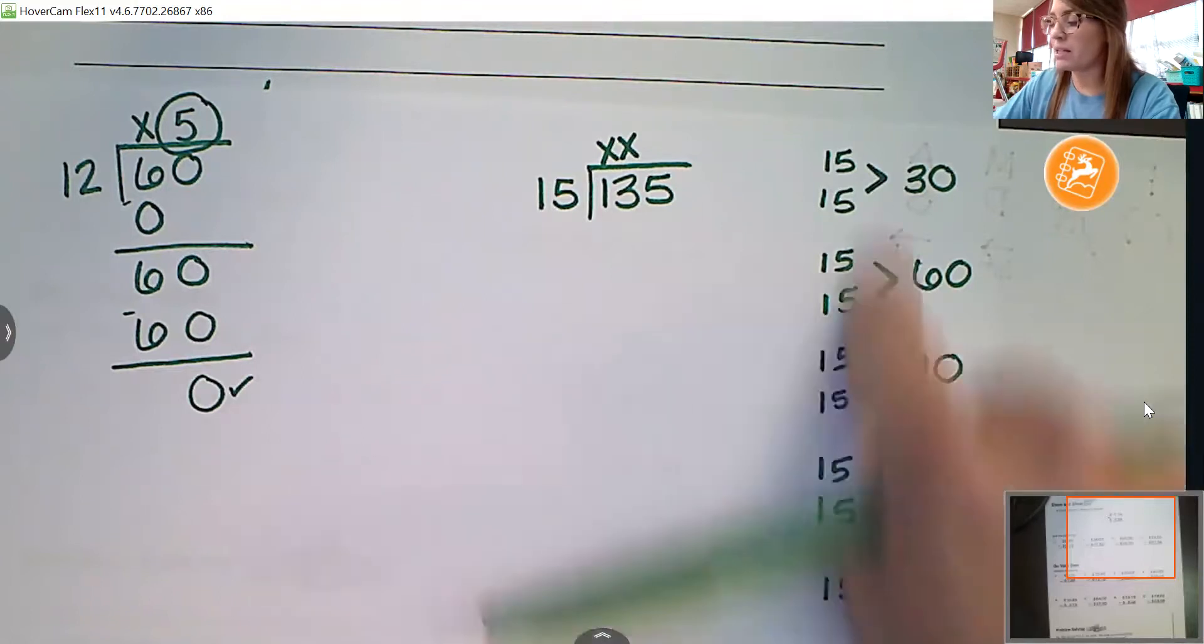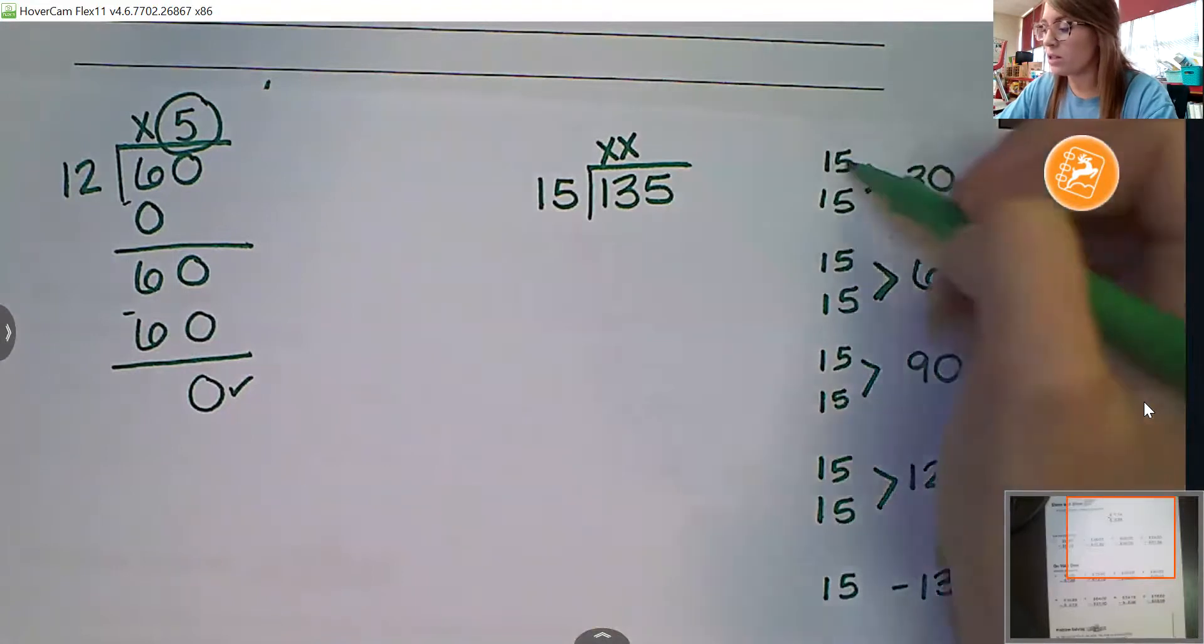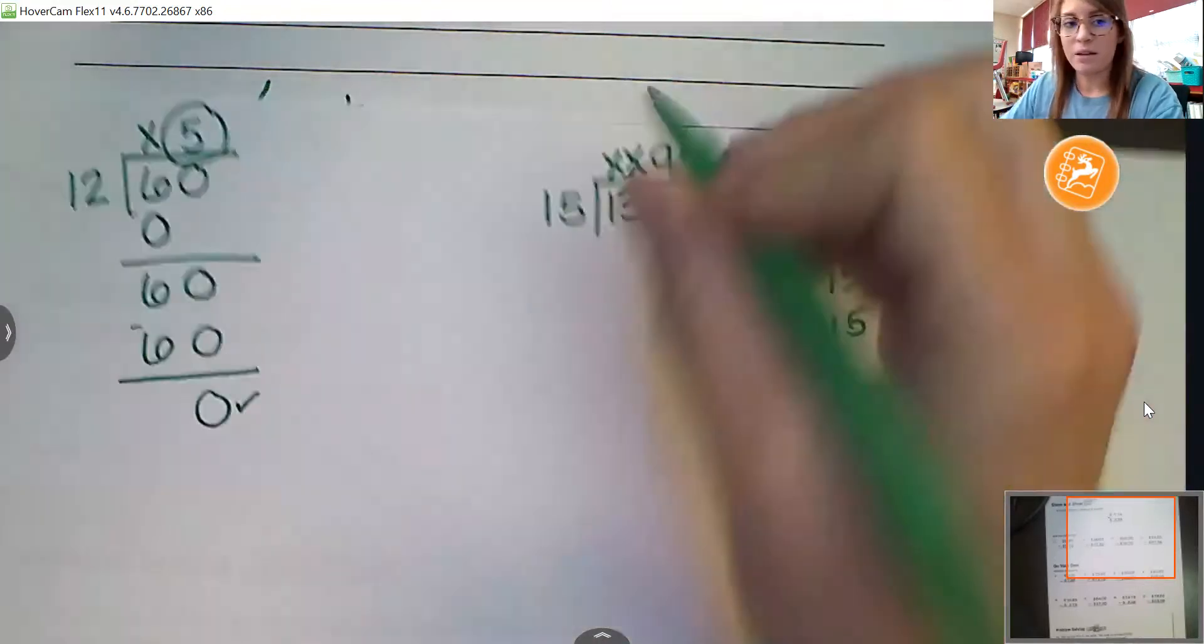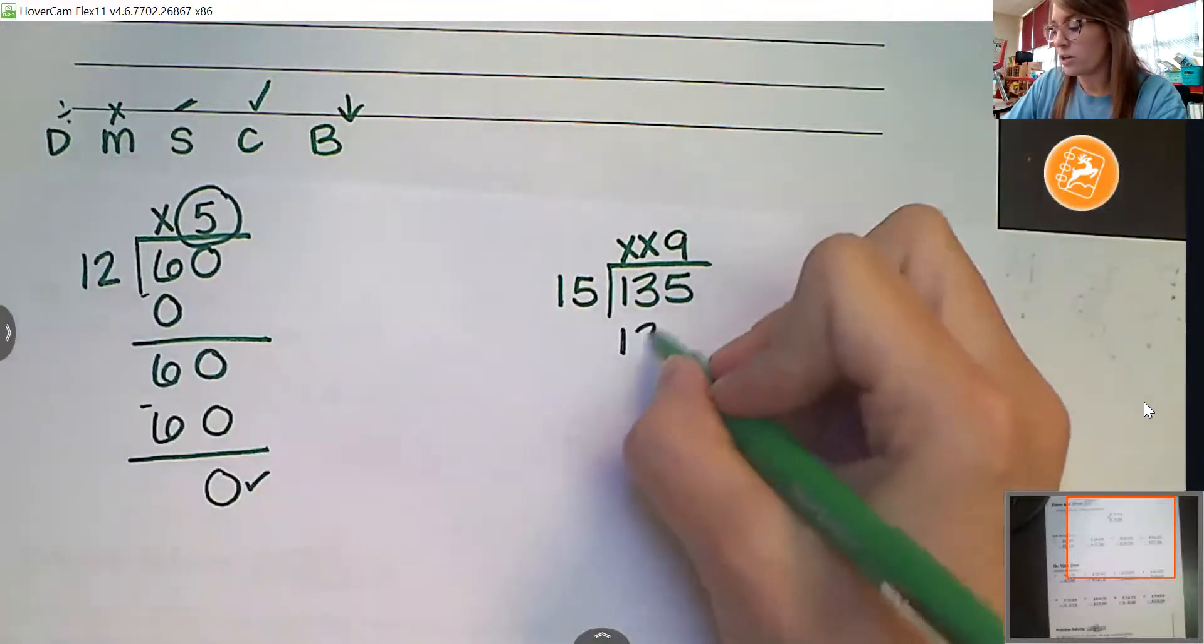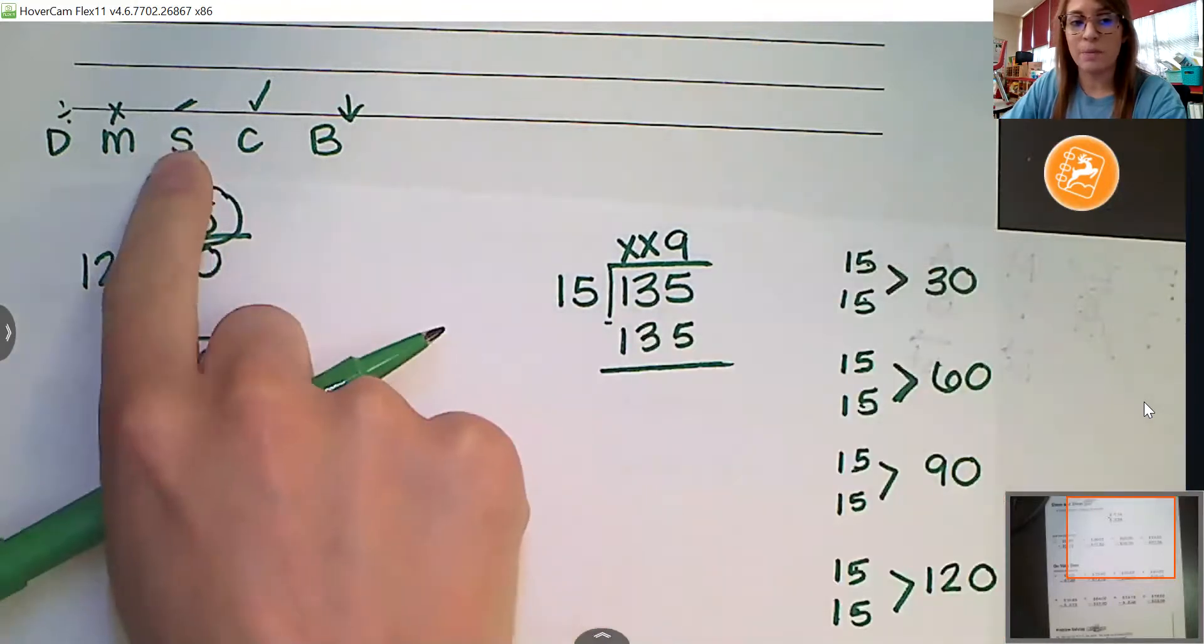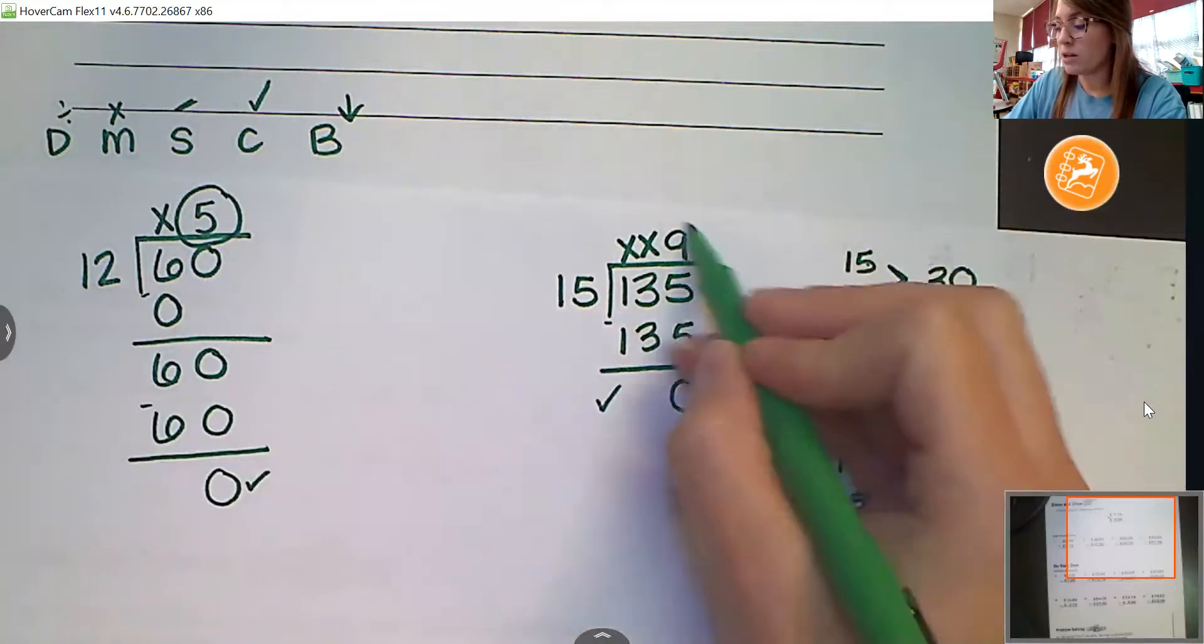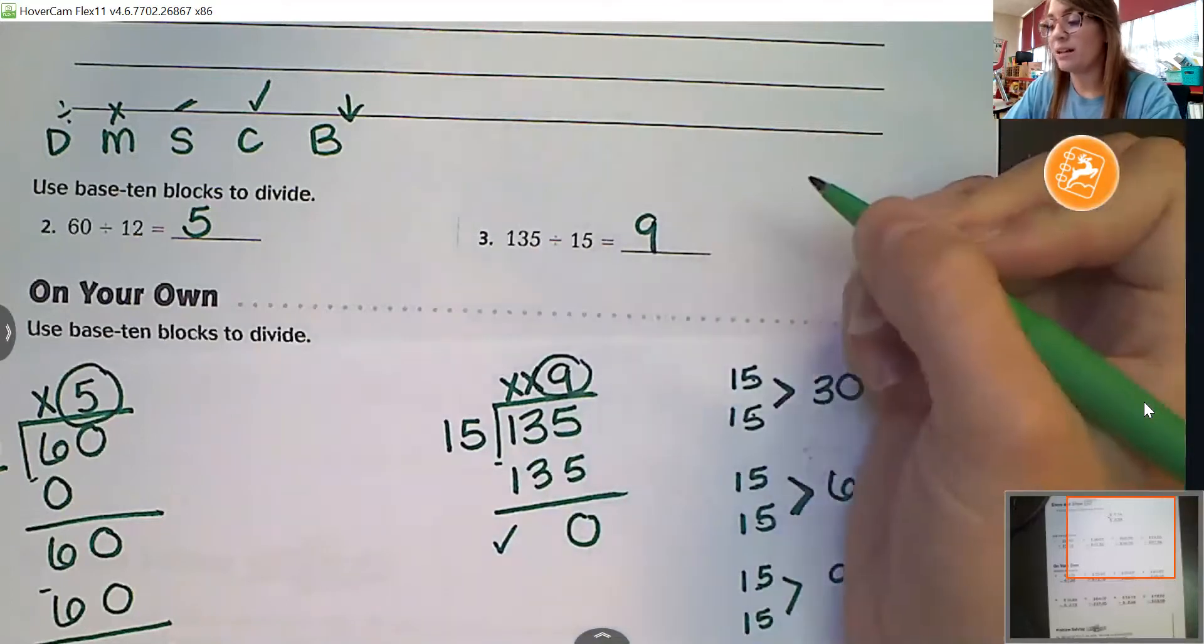Now how can I figure out how many times 15 went into 135? I can just count these up. One, two, three, four, five, six, seven, eight, nine. So, 15 times nine is 135. Then we're going to subtract to zero. Check to make sure this is less than 15, and it is. Nothing left to bring down. So, 135 divided by 15 is just nine.